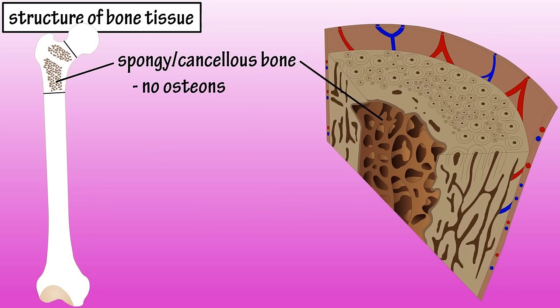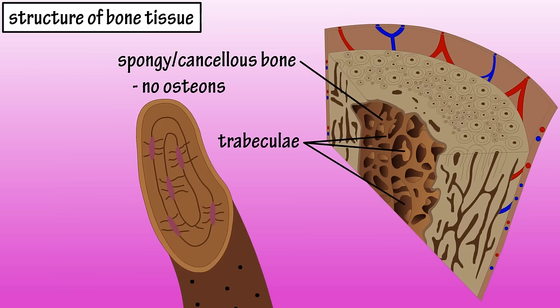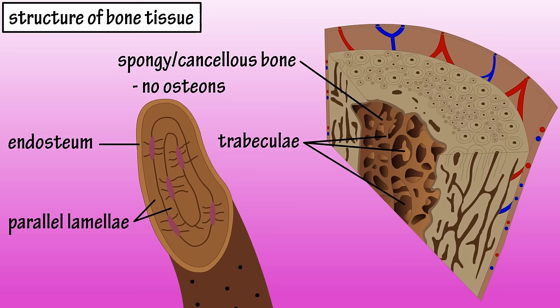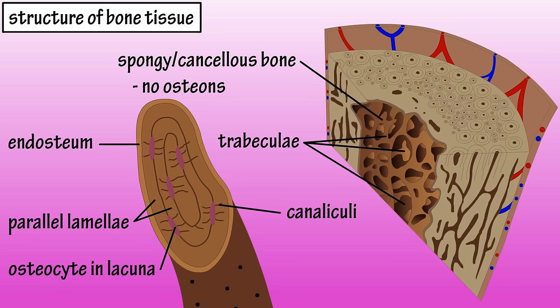Spongy bone has no osteons, as it has a lattice-like appearance of criss-crossing branches called trabeculae. The trabeculae are comprised of endosteum surrounding parallel lamellae, which are composed of bone matrix and osteocytes in lacunae, with canaliculi extending out from the lacunae. Some of the canaliculi open onto the surface of the trabeculae.